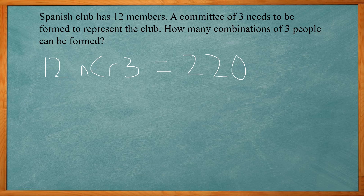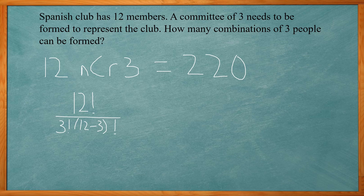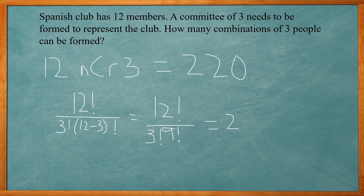Using the formula, that's 12 factorial over 3 factorial times (12 minus 3) factorial, which reduces to 12 factorial over 3 factorial times 9 factorial. Working that out gives you the same answer: 220.